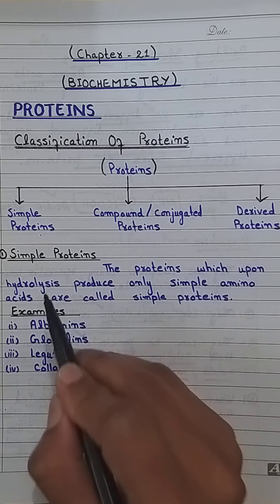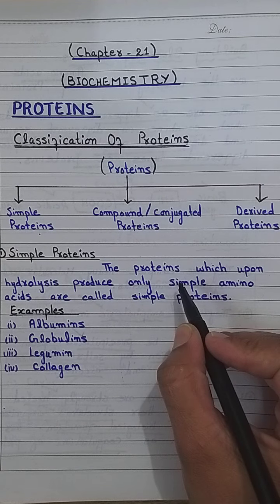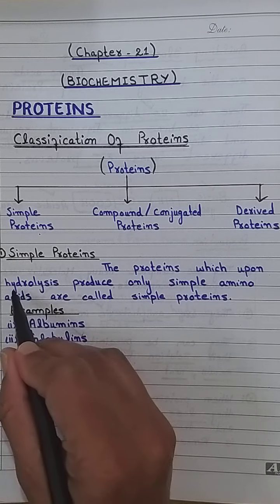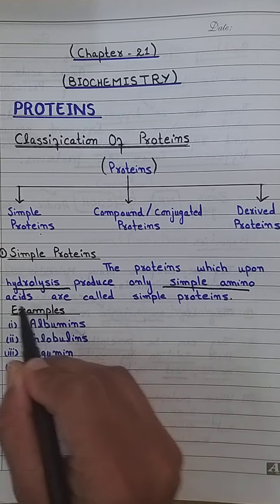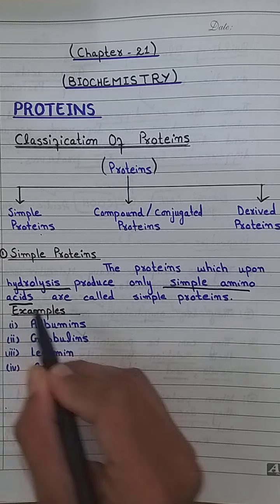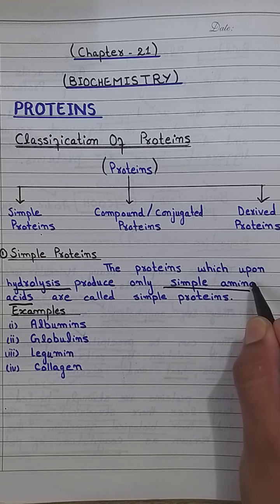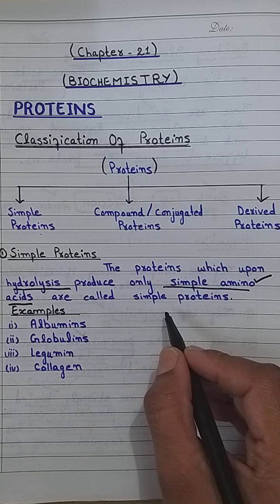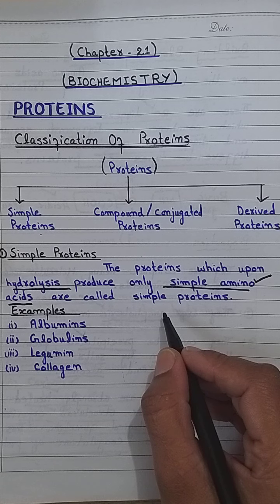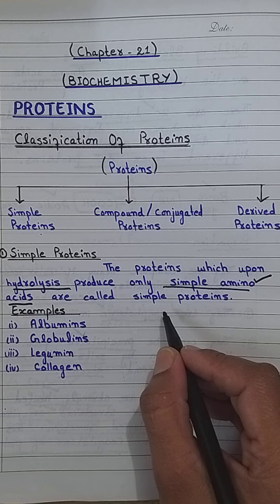What are simple proteins? Simple proteins are the proteins which upon hydrolysis produce only simple amino acids. When they break down, only amino acids are produced — no extra group is produced. Simple proteins are made up of only amino acids.